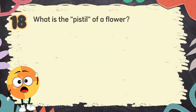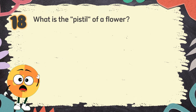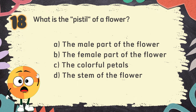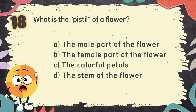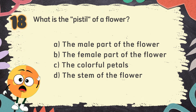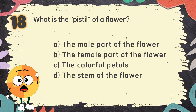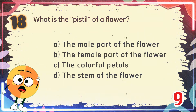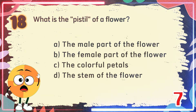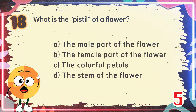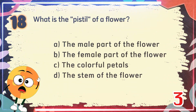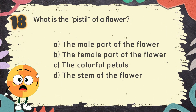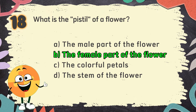Number 18: What is the pistil of a flower? The choices are: A. The male part of the flower, B. The female part of the flower, C. The colorful petals, D. The stem of the flower. The correct answer is B. The female part of the flower.